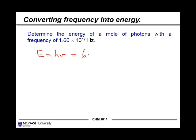Planck's constant, 6.63 times 10 to the power of minus 34, multiplied by 1.66 times 10 to the power of 17. Plug that into your calculator and you should get an answer which looks hopefully something like this.